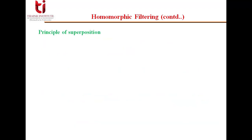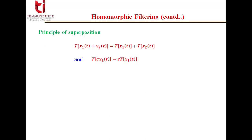The superposition property has two parts. First, additivity: if two signals x1(t) and x2(t) are added and a transform T is applied, the result should equal applying T to each signal first and then adding. Second, homogeneity: multiplying a signal by a constant and then applying the transform should equal applying the transform first and then multiplying by the constant. Both properties must hold for superposition.